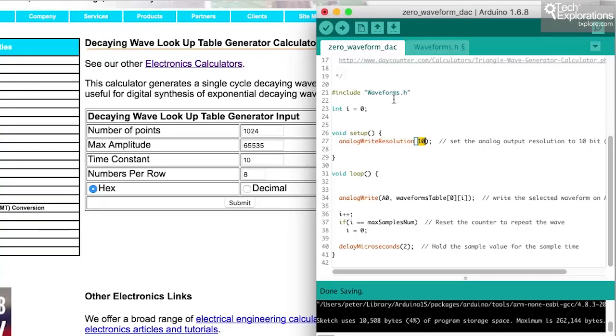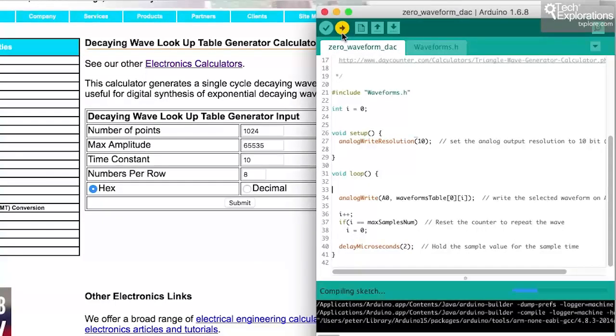So back to the main part of the sketch. I choose which waveform I'd like to create. In analog pin 0, you can say 1, 2, or 3, etc. Let's go for 0, which is a sine wave. And then it will pick a value from the first row of the waveforms table, and convert it into voltage. Then increase by 1. If it reaches the maximum sample's number, then reset the counter back to 0, and give that voltage 2 microseconds before we override it with a new voltage. Let's upload that to the Arduino.